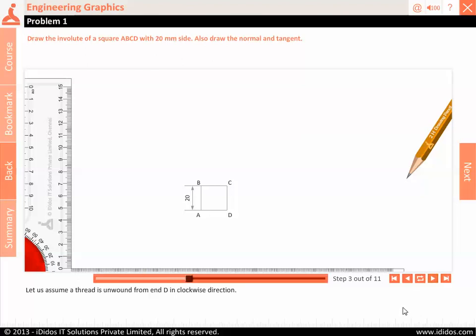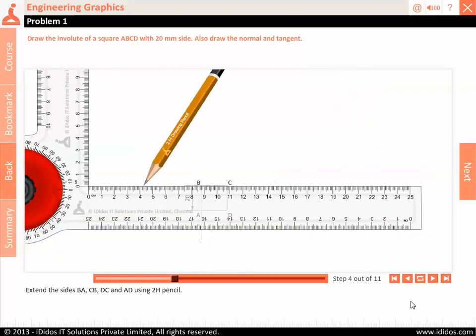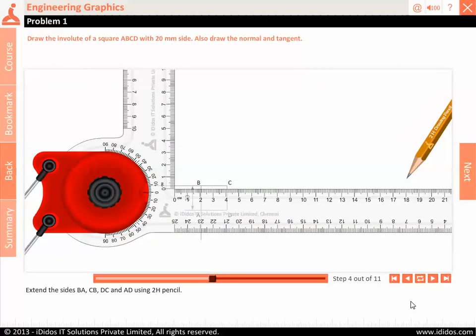Let us assume a thread is unwound from end D in clockwise direction. Extend the sides BA, CB, DC and AD using 2H pencil.